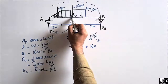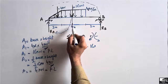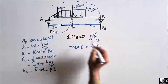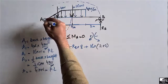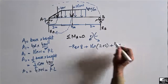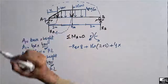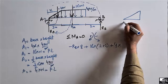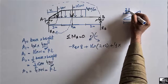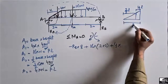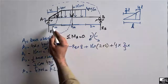The moment arm for the rectangular load is the distance from its centroid to point A. The centroid of the rectangle is at half of 4, which is 2, plus the 2-meter offset, giving a total moment arm of 4 meters. For the triangular load, the centroid lies at two-thirds of L from the zero end, so the moment arm is two-thirds of 2 meters, which is 1.33 meters.